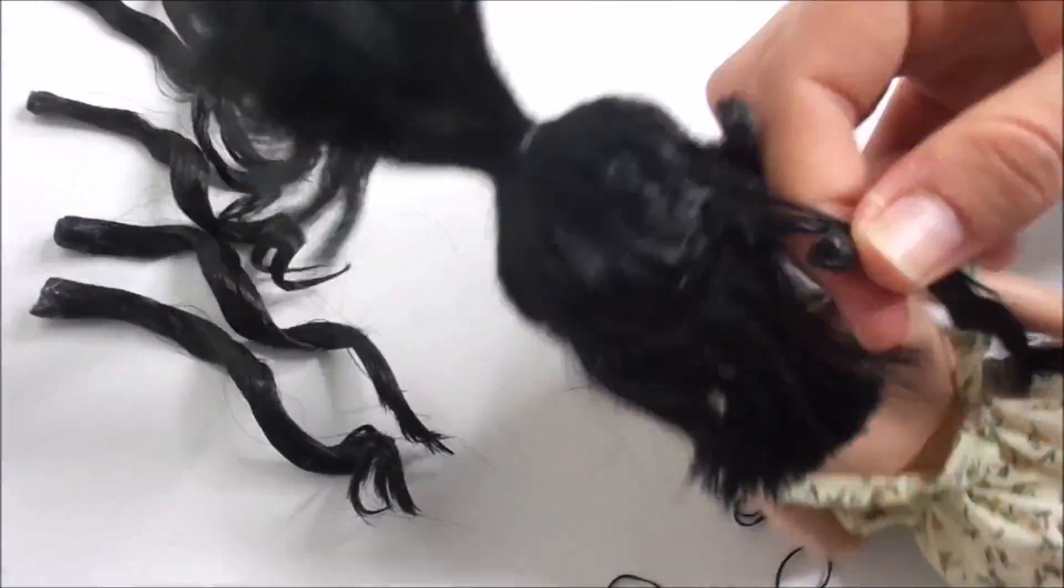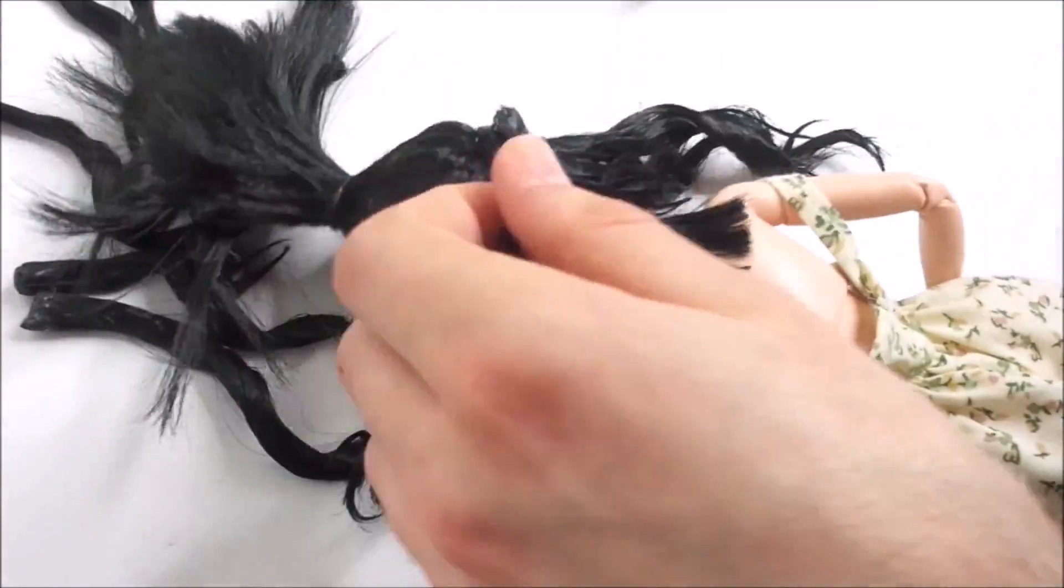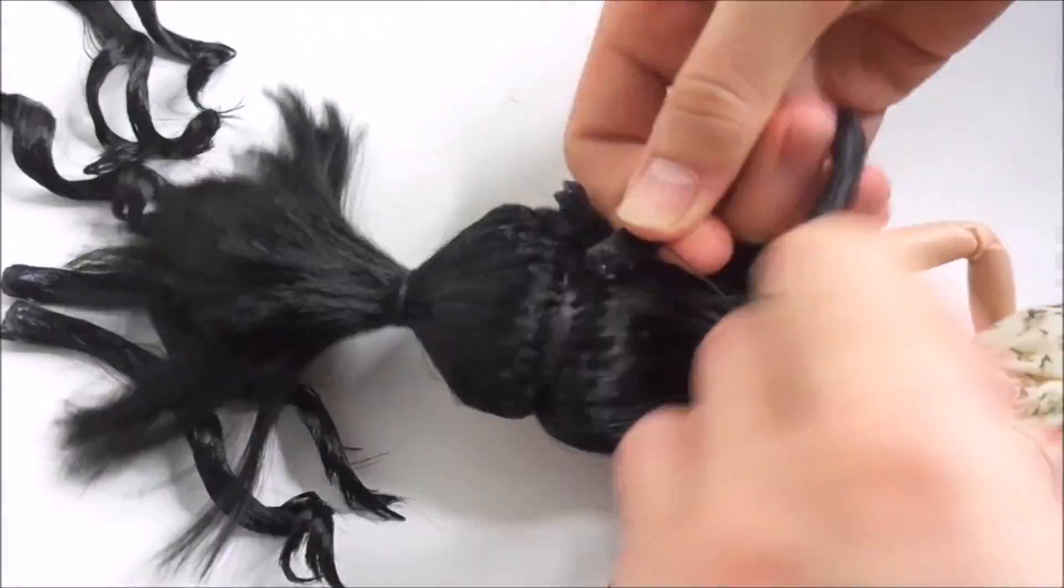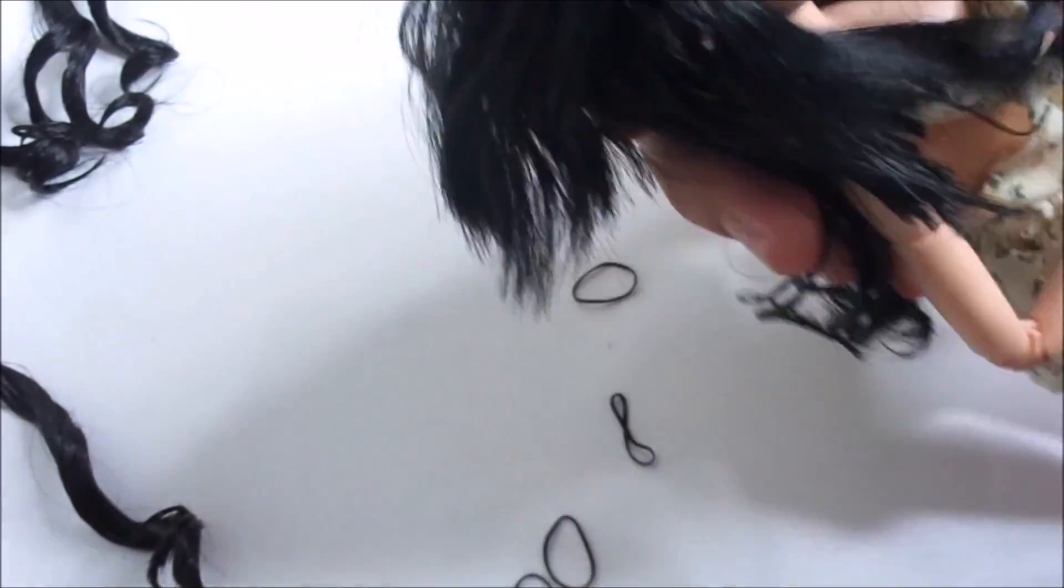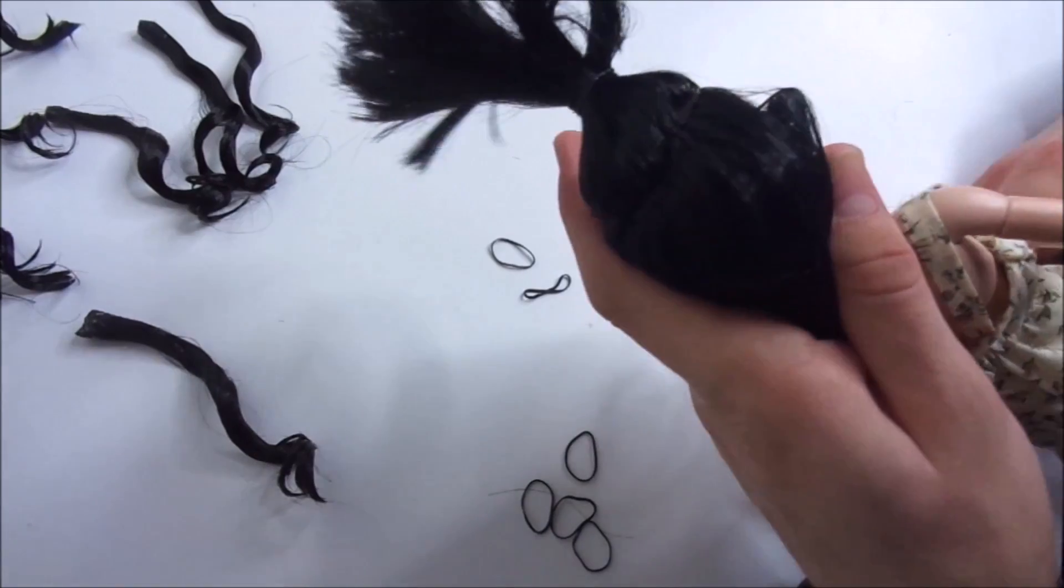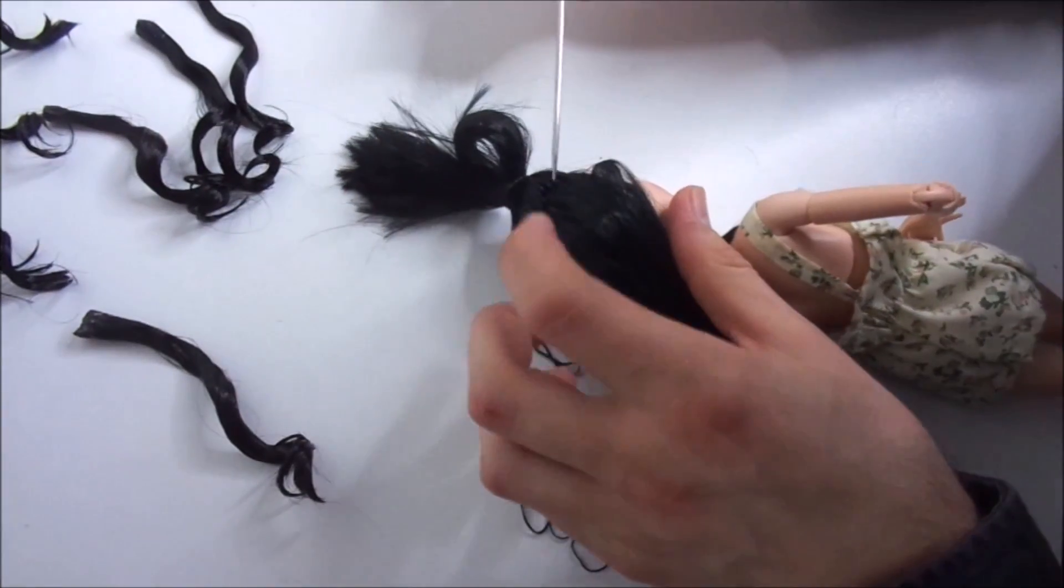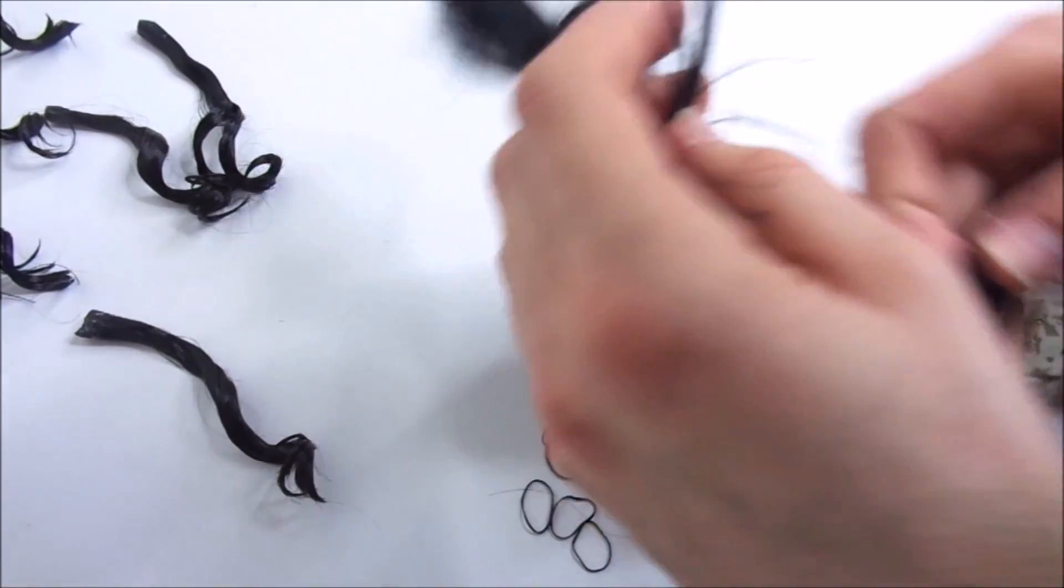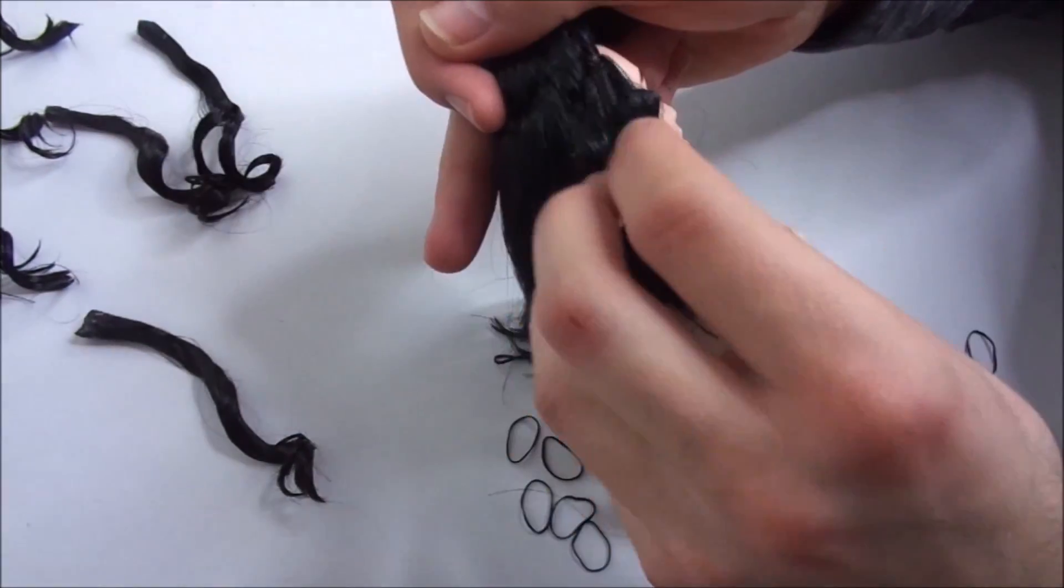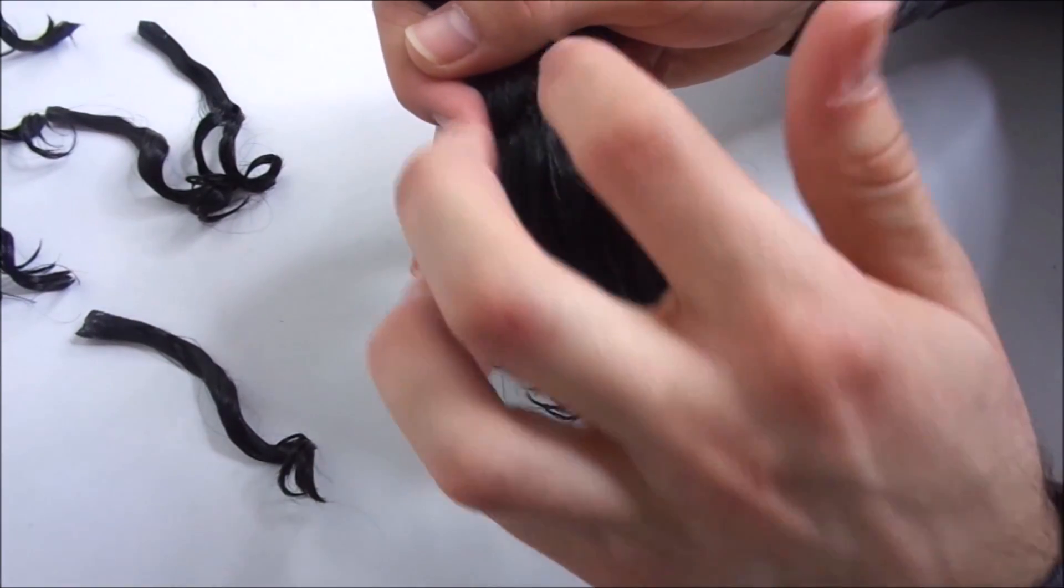After doing that for the entire bottom row, you want to take a small section just a little higher. For the smoothest hairstyle possible I bricklay the extensions, making sure I place the ones on the second row in the gaps of the first row.